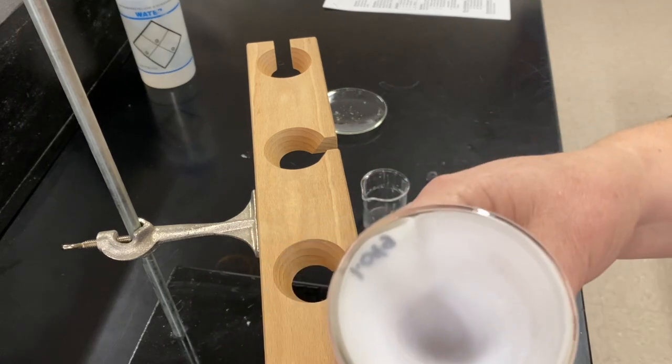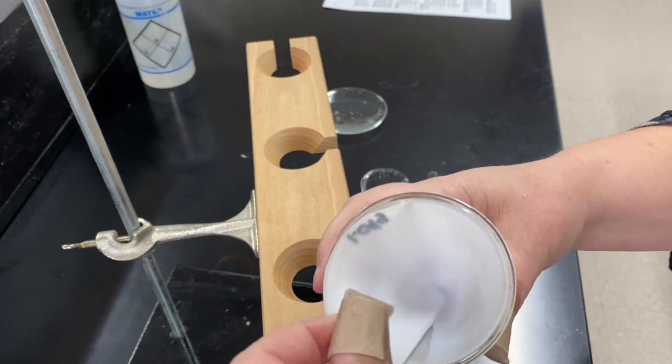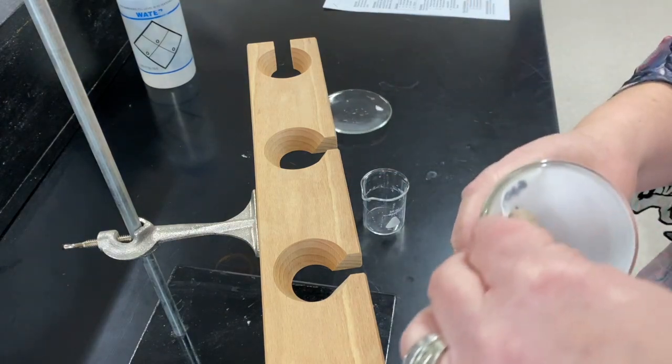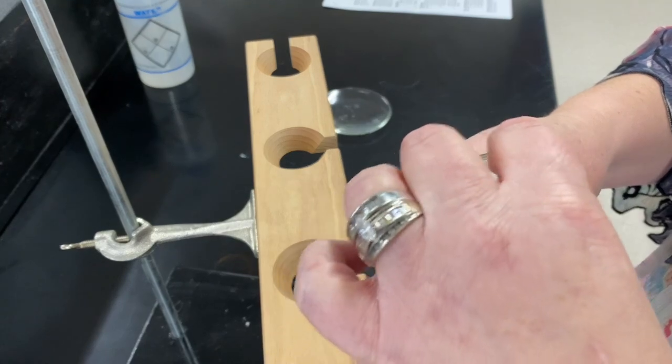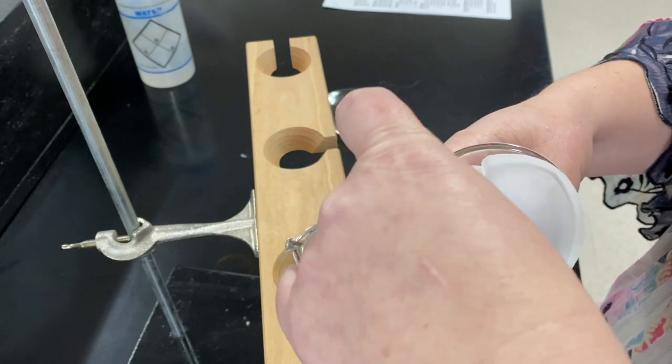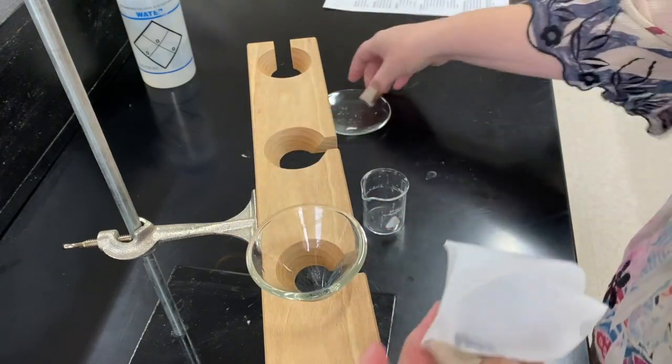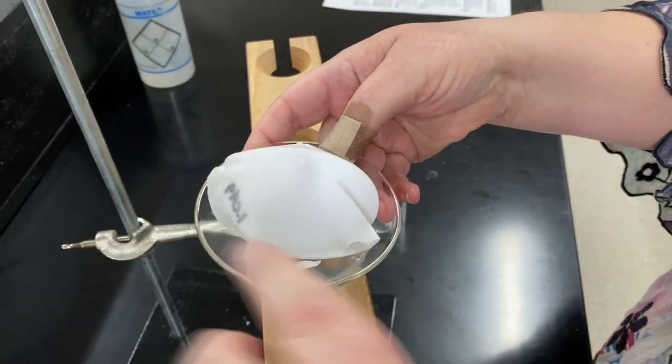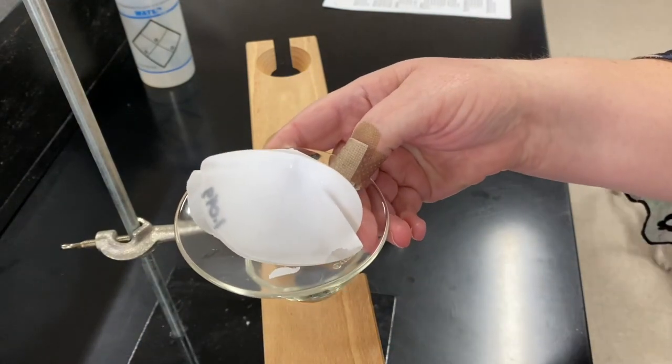So what we're going to do now is we're going to take the filter paper out very carefully. It's delicate and rips. I'm going to save that piece of paper. Let's try this again. It's very delicate. Okay, so we're going to take this out. Got it. And we're going to place it on a watch glass. I want to leave that other piece there because that's part of the mass of the paper that we need to consider.